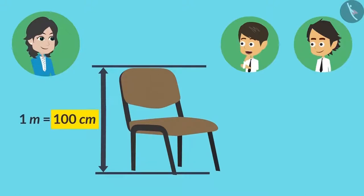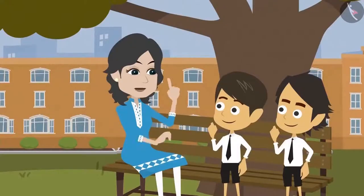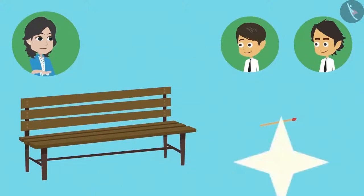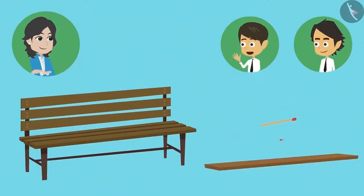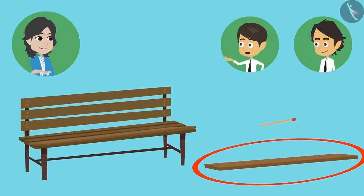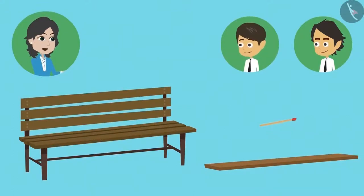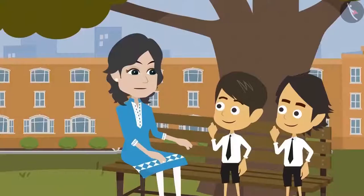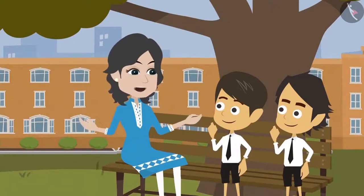Why not say 100 centimeters? Come, I will explain. If I ask you to measure the length of this seat, what will you measure it with? With this small matchstick? Or with this big stick? I will measure it with this stick. Why? Because with this I can measure quickly. I will have to use the matchstick several times. You mean measuring this long bench with this stick is much easier and practical? Yes. In the same way, meter is used to measure long things and centimeter is used to measure small things.